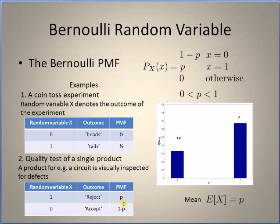If you have a probability p that the circuit is rejected, then the probability mass function equals p for x=1. The value equals 1-p for x=0, meaning the probability it will be accepted is 1-p.